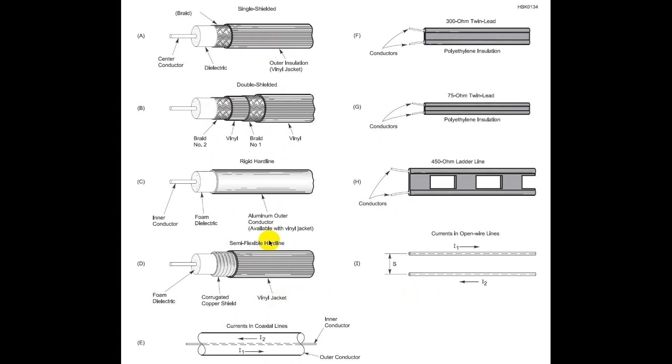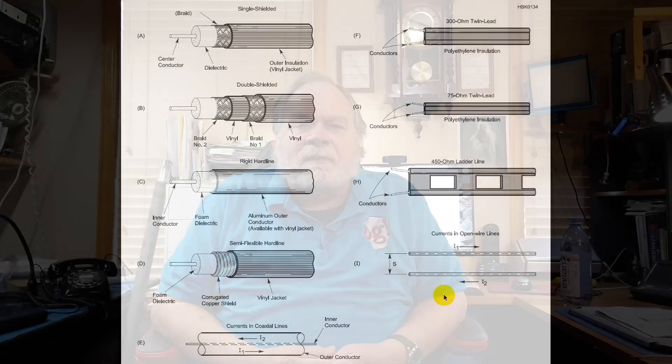I think we all start with the unbalanced coax, and sometimes we move on to trying other things. We've looked at that figure. So there you have it. We've looked at different types of transmission lines, both the coaxial cables and the parallel transmission lines, and they all have a place in ham radio.